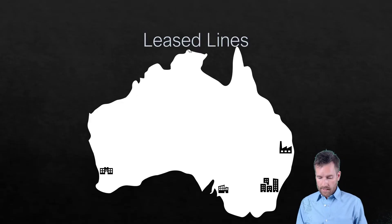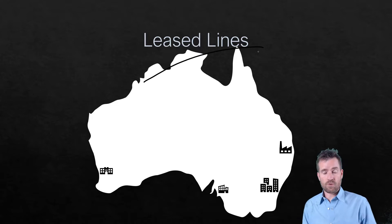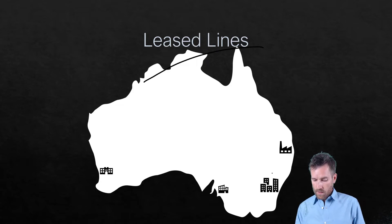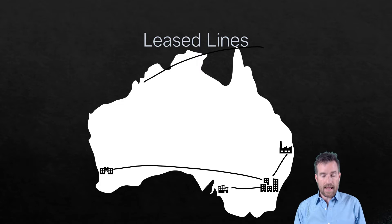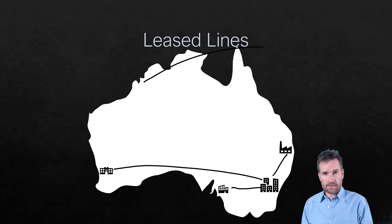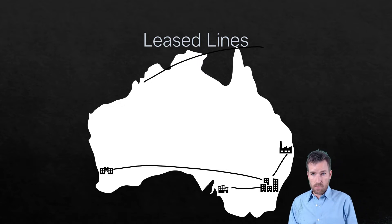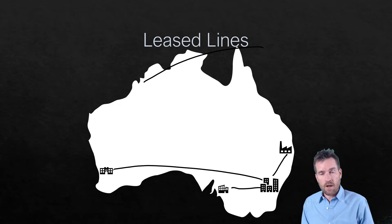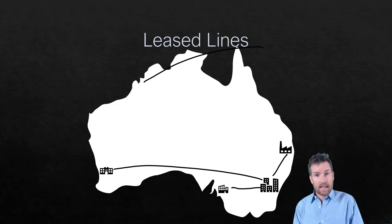If we're wanting to interconnect these, one ideal situation would be to use leased lines. Perhaps we go to our internet service provider or some sort of provider that we can actually rent lines in between our main headquarters and these different offices — a dedicated line that's for us and no one else can use it. This is ideal because we can get great bandwidth between these locations and we don't have to share that bandwidth with others. The problem is it can be very expensive.